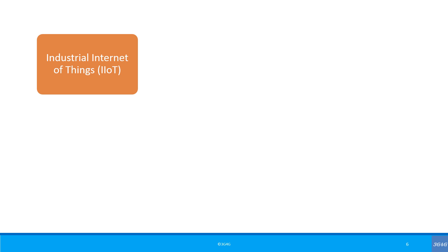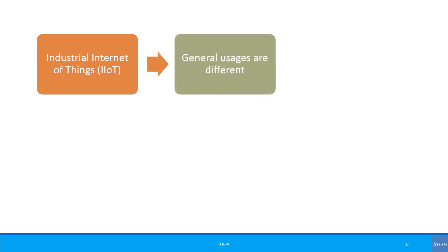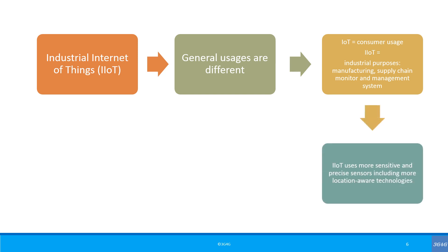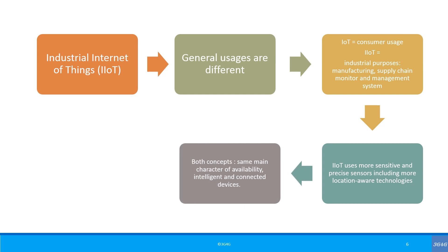Regarding the Industrial Internet of Things, the only difference between IoT and IIoT are their general usages. While IoT is most commonly for consumer usage, IIoT is used for industrial purposes such as manufacturing, supply chain monitoring, and management systems. IIoT uses more sensitive and precise sensors, including more location-aware technologies, on the supply chain side with sophisticated advanced controls and analytics. Both concepts share the same main characteristics of availability, intelligent and connected devices.